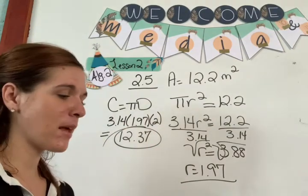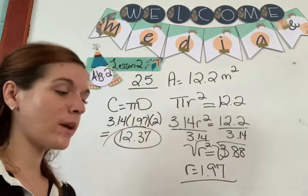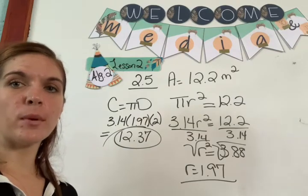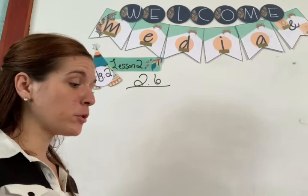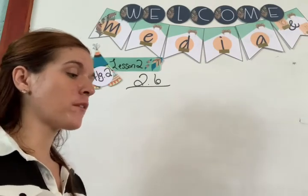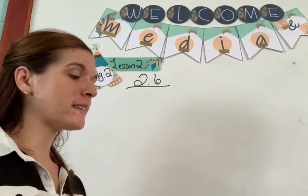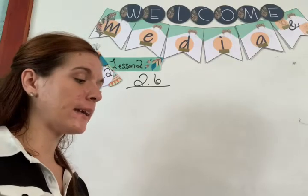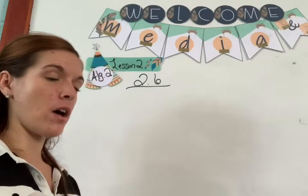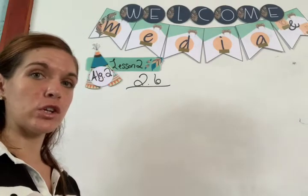It's just a puzzle! One more example, then we're on to practice. Example 2.6: the circumference of a circle is 8 pi. What is the area of the circle?